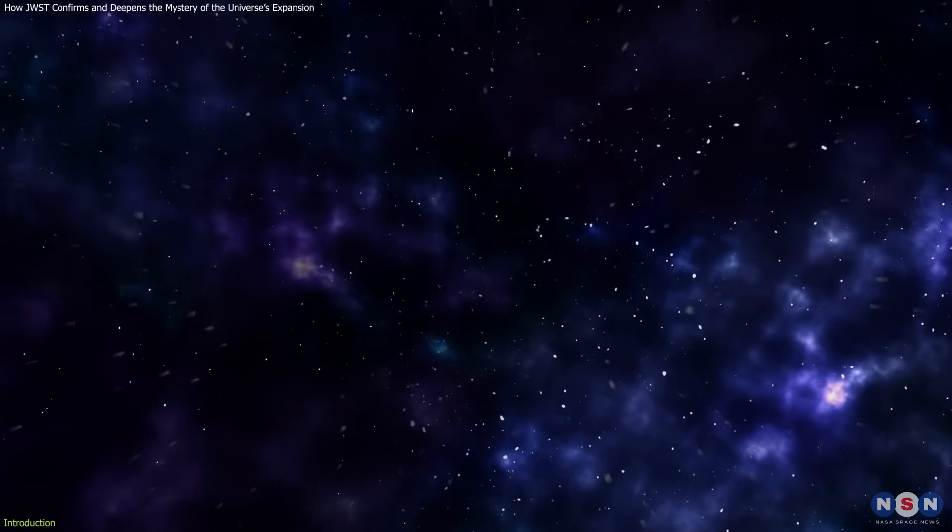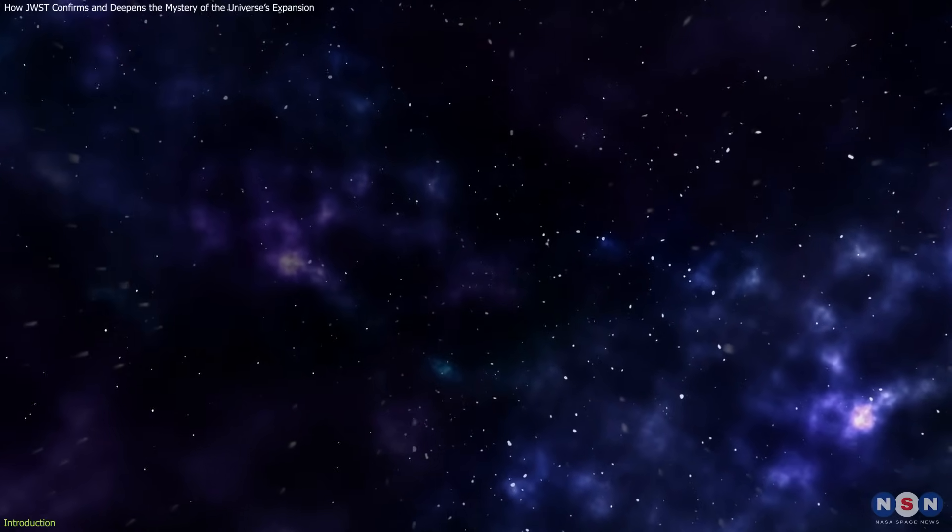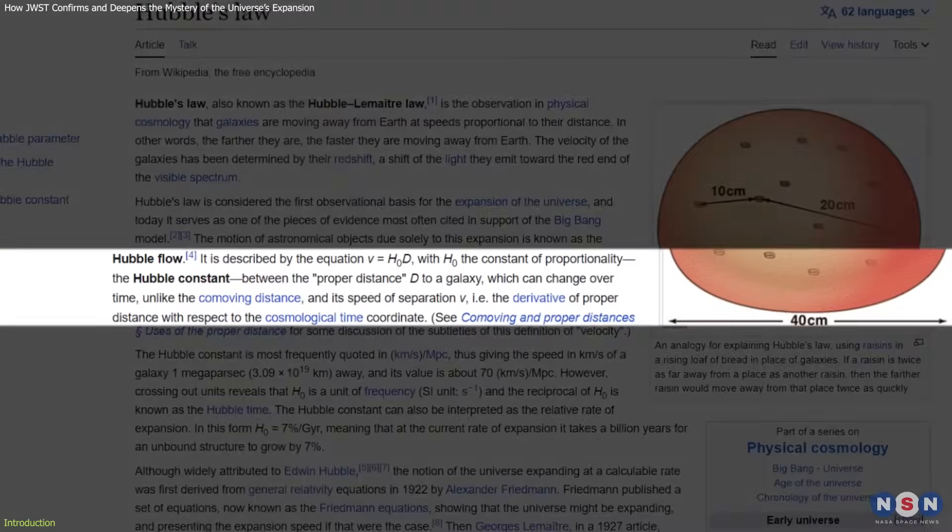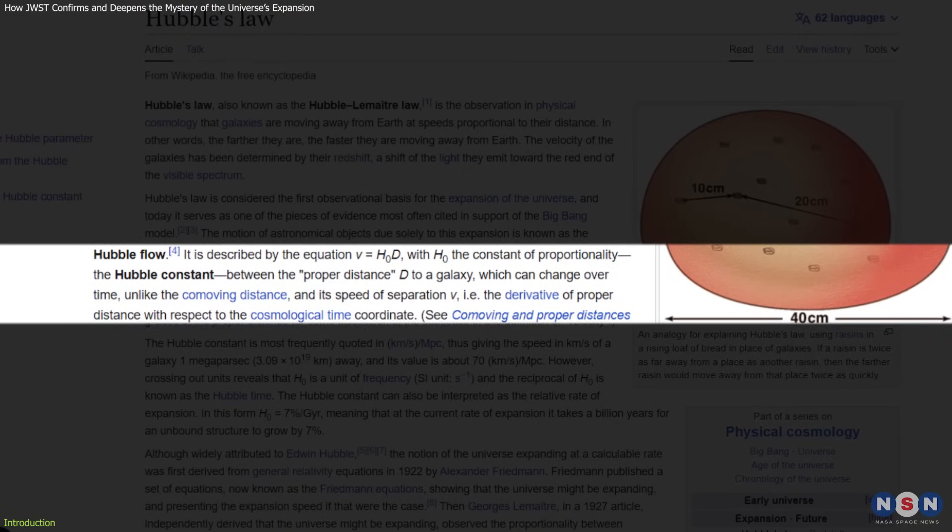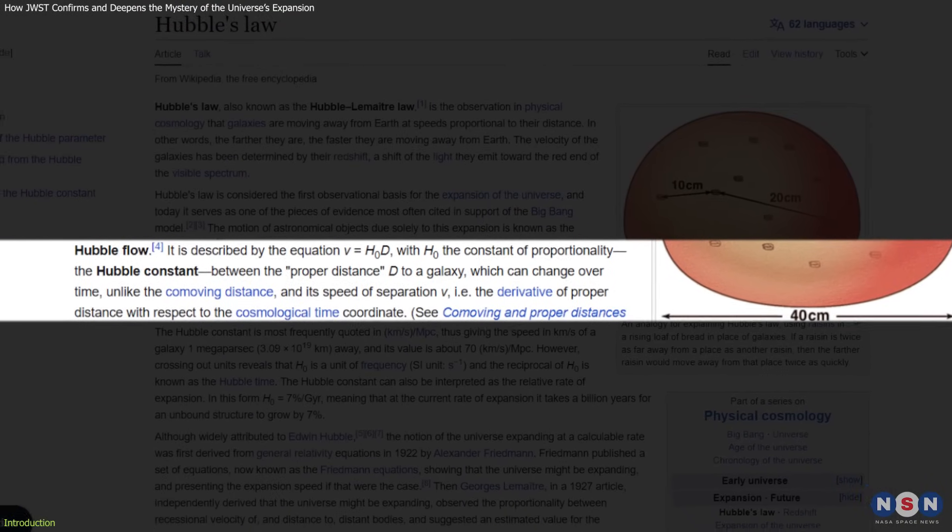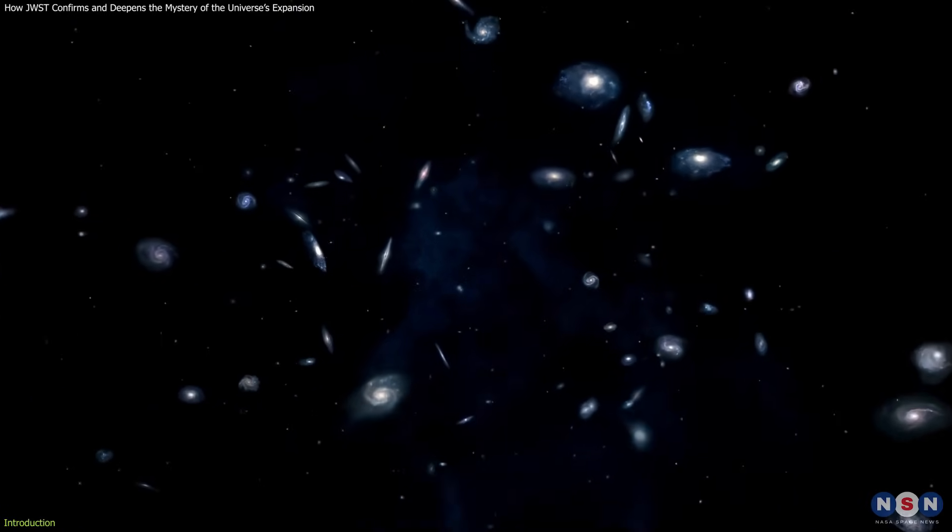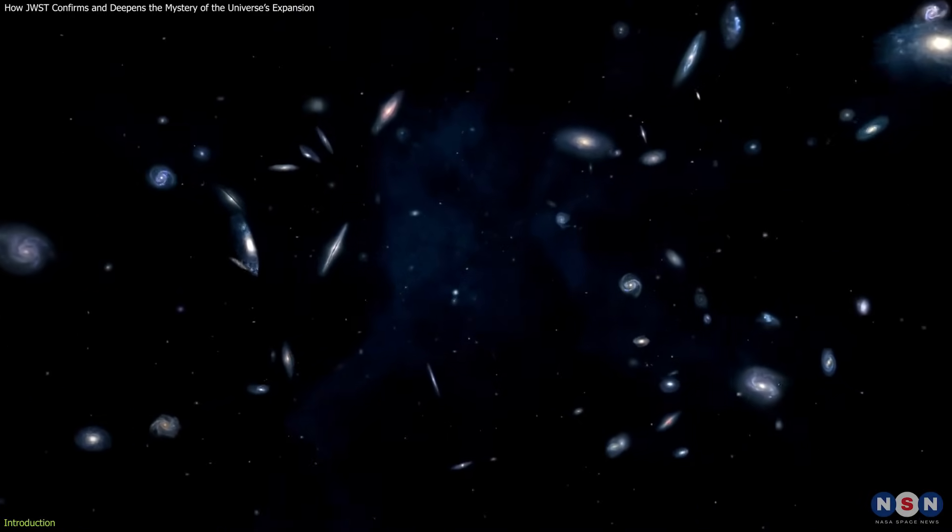These are some of the questions that astronomers have been trying to answer for decades using a key parameter called the Hubble constant. It is the rate of expansion of the universe, and it determines how old, how big, and how fast the universe is.